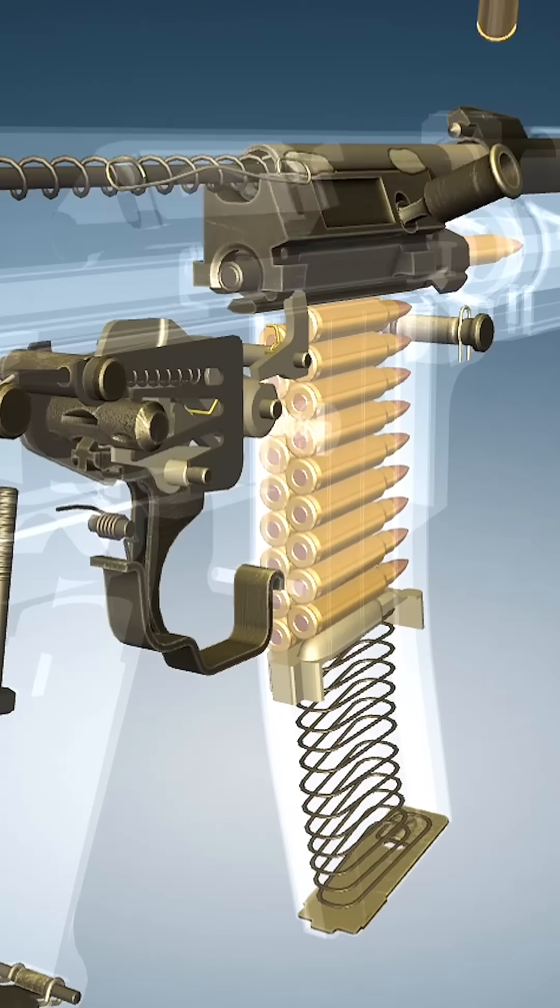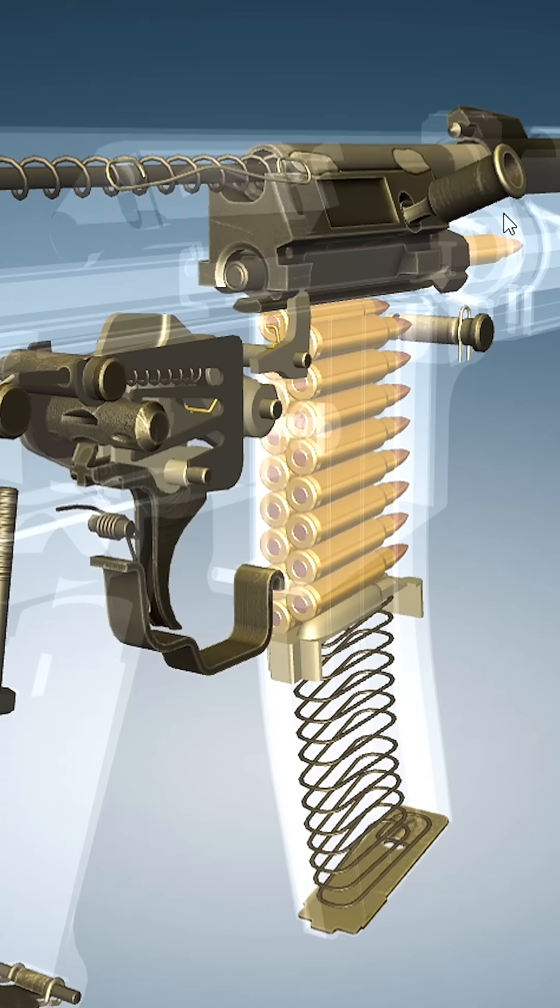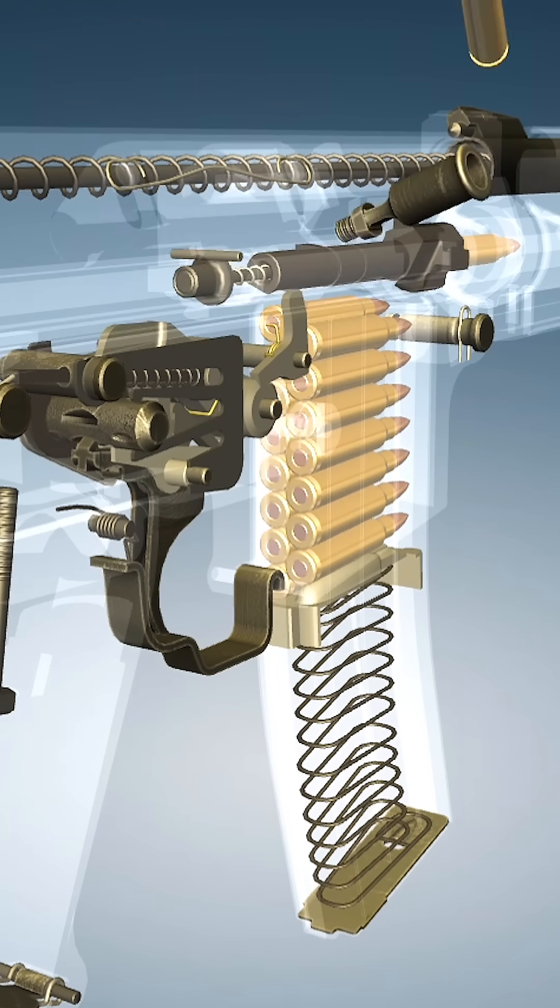Unlike many other rifles of its time, it features a collapsible stock for improved maneuverability in close quarters.